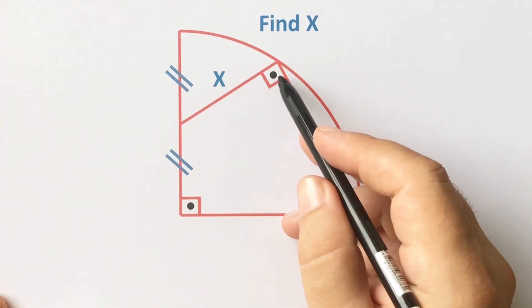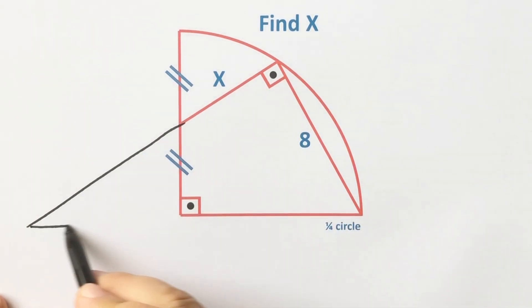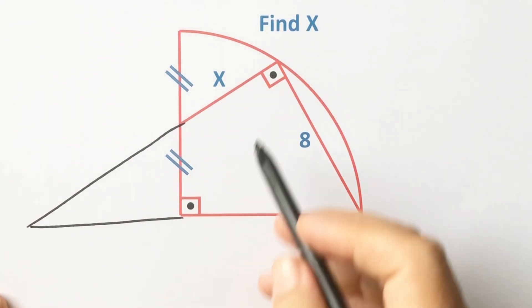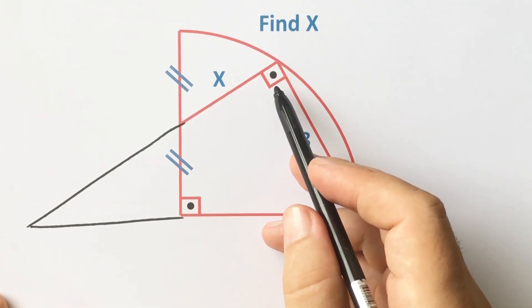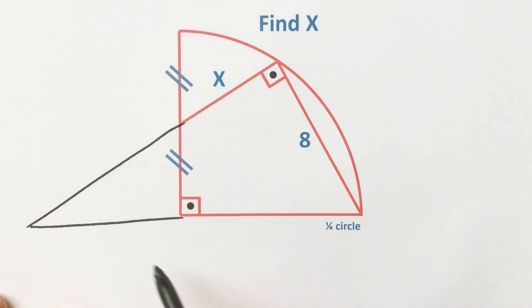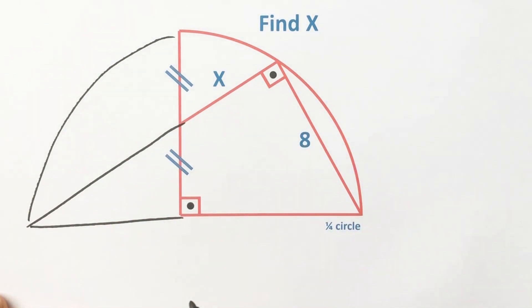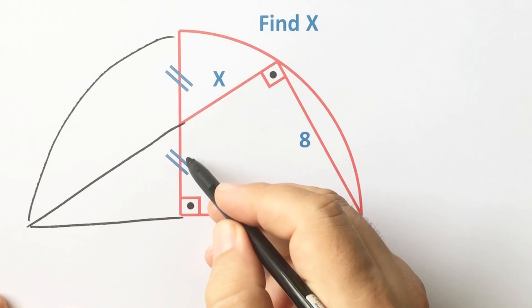First, notice that here is 90 degrees. If we extend this, the side opposite to the 90 degrees must be the diameter. That means this diagram turns out to be a semicircle.